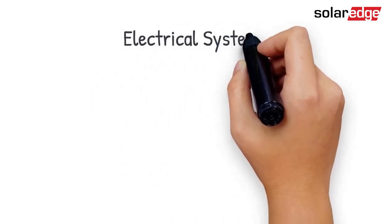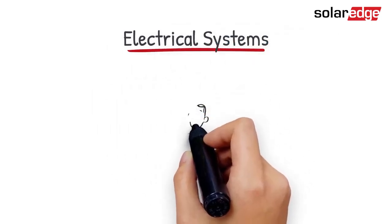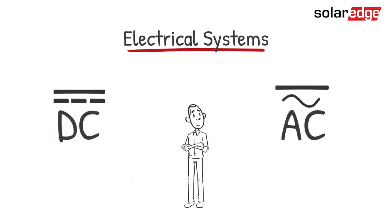There are two types of electrical systems to connect a PV system to storage batteries: DC-coupled and AC-coupled.